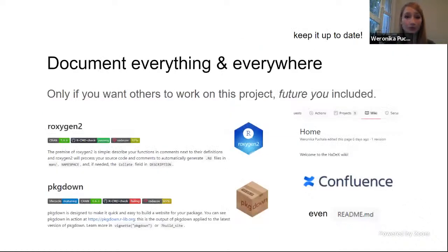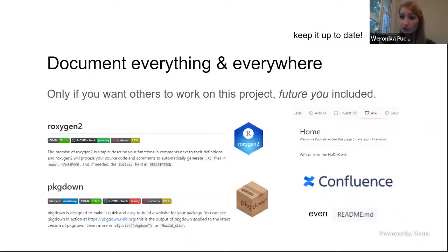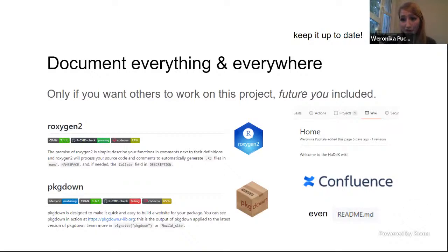Documenting everything, everywhere, and keeping it up to date is really important and often neglected. Just think about future you and other people who want to work on your project. In R, there are great packages: roxygen2 and pkgdown build nice and easy-to-use documentation without much additional effort — you just write the documentation, add a couple of lines of code, and have a really nice result. If you don't want to do that, you also have a wiki page on your GitHub. If you have money, you can use Confluence. Or just put it in a README, but put it somewhere. Keep in mind that writing documentation is a process that never stops.